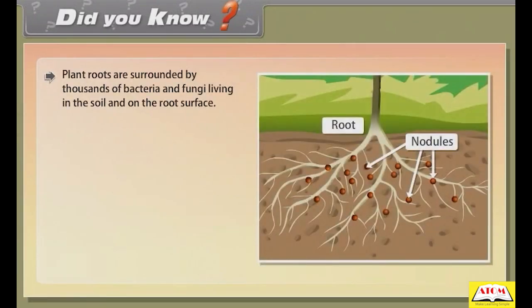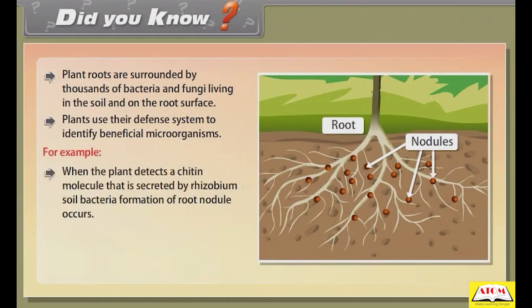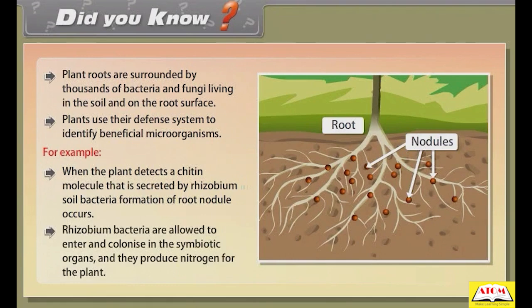Did you know? Plant roots are surrounded by thousands of bacteria and fungi living in the soil and on the root surface. Plants use their defense system to identify beneficial microorganisms. For example, when the plant detects a chitin molecule secreted by Rhizobium soil bacteria, formation of root nodules occurs. Rhizobium bacteria are allowed to enter and colonize in the symbiotic organs and they produce nitrogen for the plant.